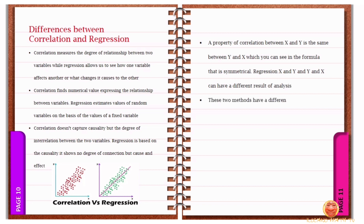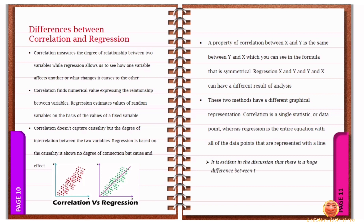These two methods have a different graphical representation. Correlation is a single statistic or data point, whereas regression is the entire equation with all of the data points that are represented with a line. It is evident in the discussion that there is a huge difference between the two mathematical concepts. Correlation and regression can be used to describe the nature of the relationship and strength of two continuous quantitative variables.